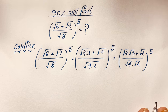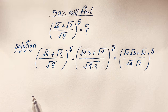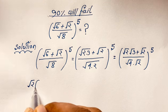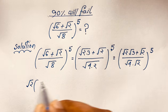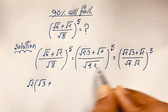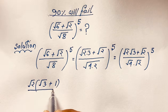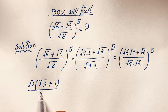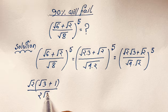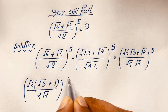Now at this moment, square root 2 is common in the numerator. If I separate it: we get square root 2 times (square root 3 plus 1), over square root 4 times square root 2, all to the power 5.